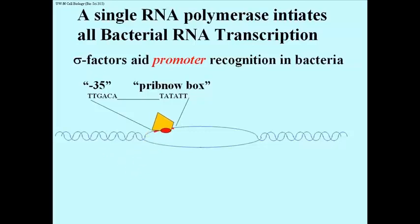The sigma factor, illustrated as a red oval attached to RNA polymerase here, is required for the polymerase to recognize and bind to the promoter. Once transcription starts, and after the polymerase has moved a short distance along the template, the sigma factor dissociates from the RNA polymerase. RNA polymerase will then continue to elongate a transcript without the help of sigma factor.